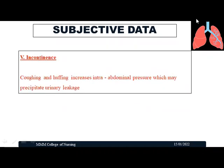The fifth subjective symptom is incontinence. Coughing or huffing increases intra-abdominal pressure, and as a result there will be urinary leakage — that is known as incontinence. This is another cardinal symptom associated with respiratory problems.